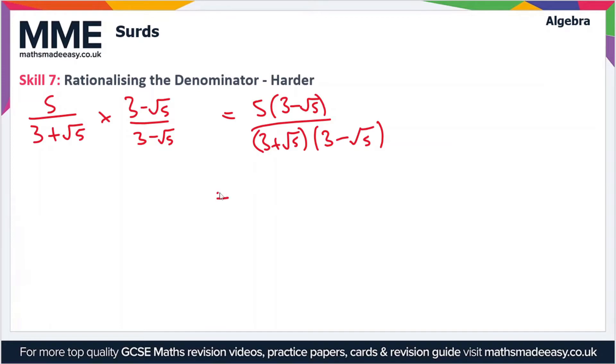So let's go on to the next line here. So we've got 5 times 3 which is 15 and 5 minus root 5 which gives us minus 5 root 5. So we're dividing that by 3 plus root 5 times 3 minus root 5. So we're going to use the FOIL method for expanding double brackets.